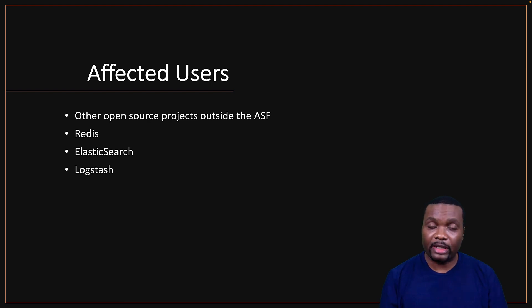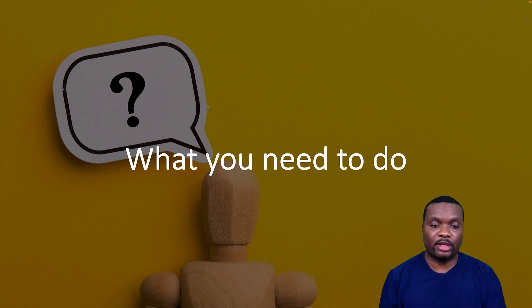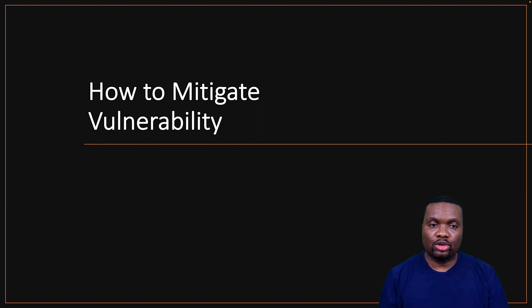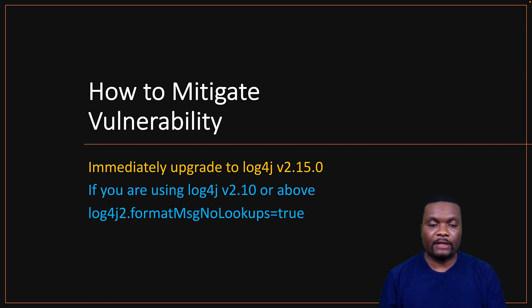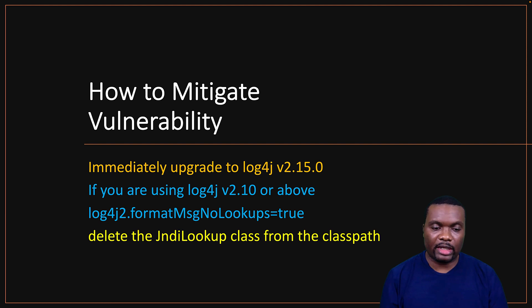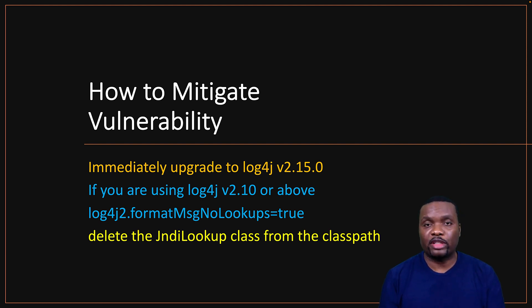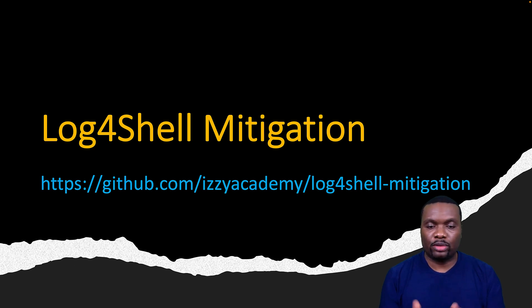Make sure you patch your system and update the dependency version to the latest one. The first step is to immediately upgrade to version 2.15.0 of Log4j 2. If you're using a version greater than 2.10 and cannot upgrade yet, set the system property log4j2.formatMsgNoLookups=true to disable the issue. You can also remove the JndiLookup class from the classpath. I have a link to my GitHub repo — easyacademy/log4shell-mitigation — where you can find the exact commands needed.